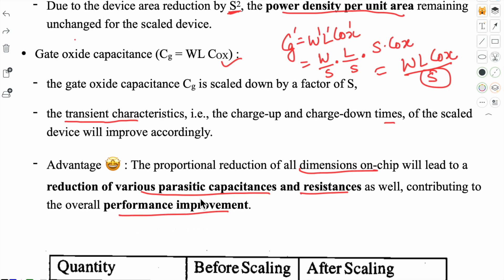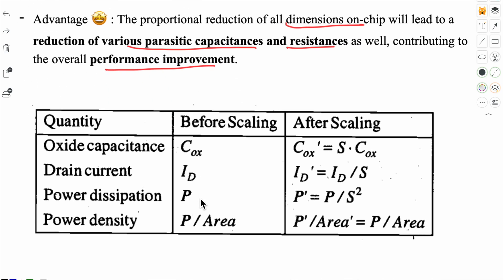Let's summarize all these factors. For oxide capacitance, before scaling to after scaling, it is increased by the scaling factor. Drain current is reduced by the scaling factor. Power dissipation has a very good advantage as it is scaled down. Power density has no effect, before and after it remains same in constant field scaling.